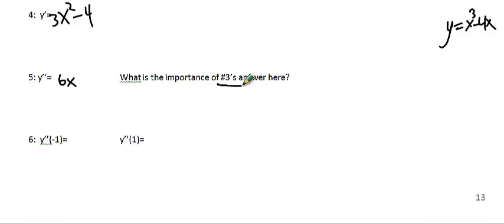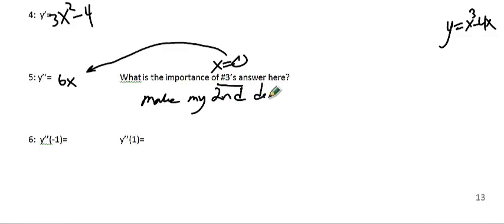This question asks what's the importance of number 3's answer here. Now if you look up, number 3 was x equals zero. And the truth is, if I was to plug in zero here, that would make my second derivative zero. So that's the point. The point where it changes inflection happened to be where my second derivative was equal to zero.